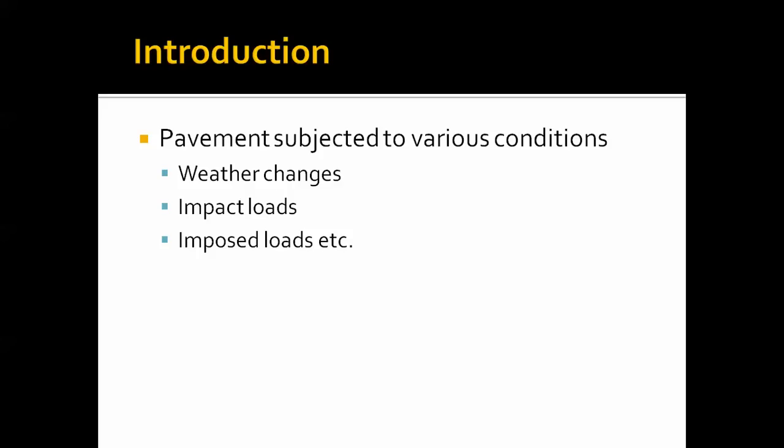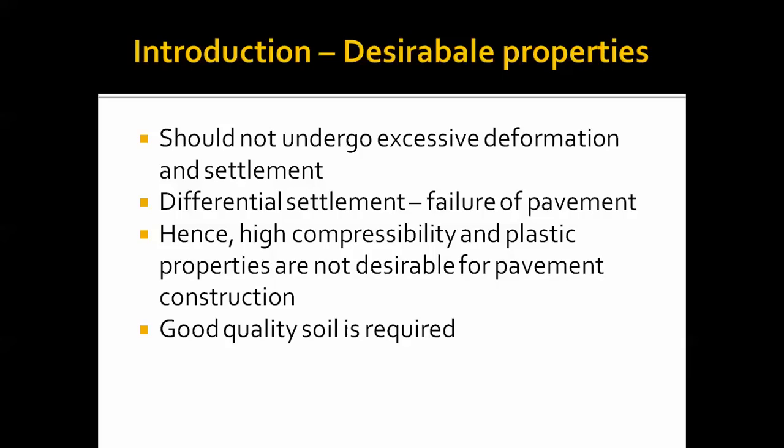Pavement materials should be able to withstand impact loads. Imposed loads are normal loads kept on the pavement over a duration. For example, 20 kg placed on the pavement remains there for a certain time period. In the case of vehicular traffic, as one vehicle moves away another arrives, creating a continuous load at a given point — this is varying imposed load.